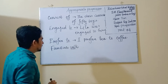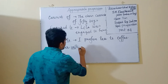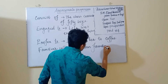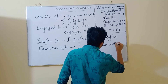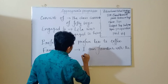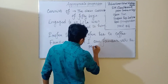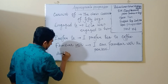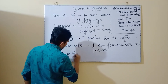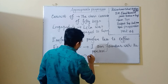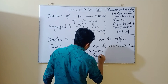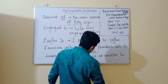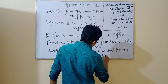The word 'familiar' is followed by the preposition 'with'. For example: I am familiar with the person. The word 'ambition' is followed by the preposition 'for'. For example: He has no ambition for money.